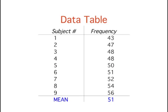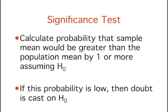This table shows the frequency that the suggested picture was chosen by each of the 9 subjects. You can see that the sample mean is 51, which is greater than the hypothesized population mean of 50 by 1. To test the significance of the difference from the null hypothesis, we assume that the null hypothesis is true, and then we calculate the probability that a sample mean would be greater than the population mean by 1 or more. If this probability is low, then doubt is cast on the validity of the null hypothesis.